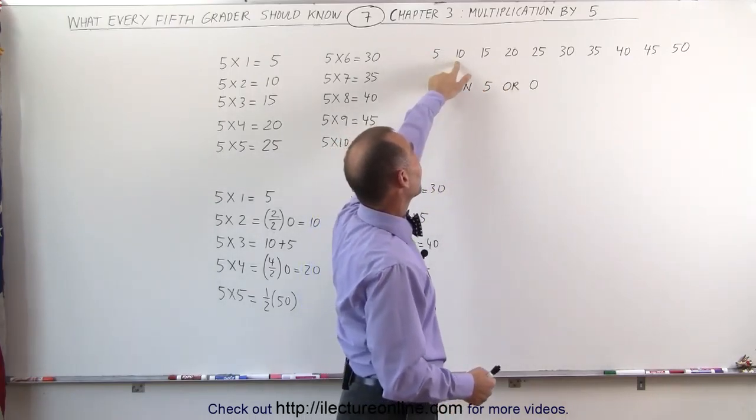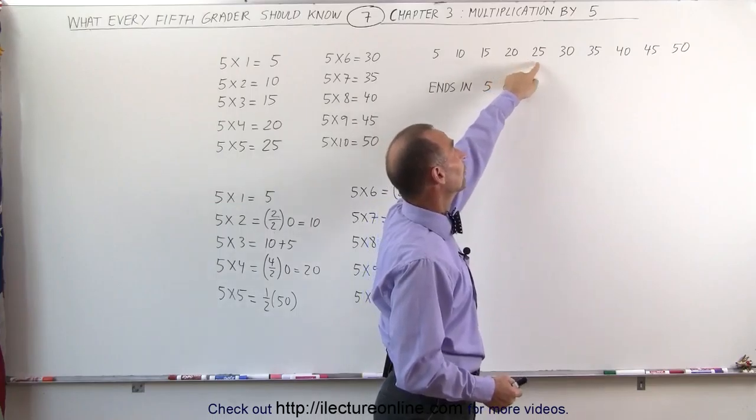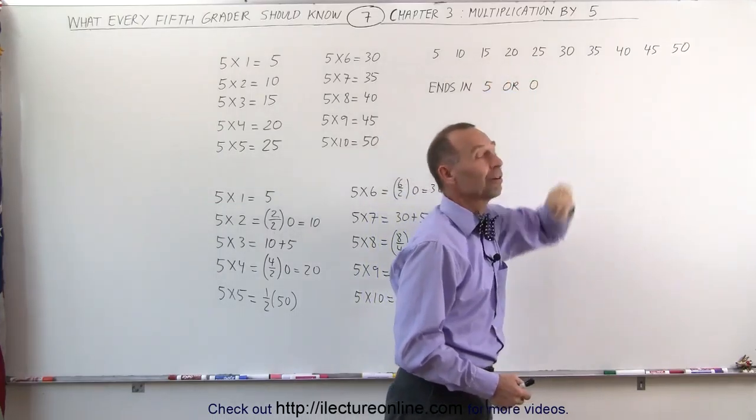So the first answer was 5, then 10, 15, 20, 25, 30, 35, 40, 45, 50.